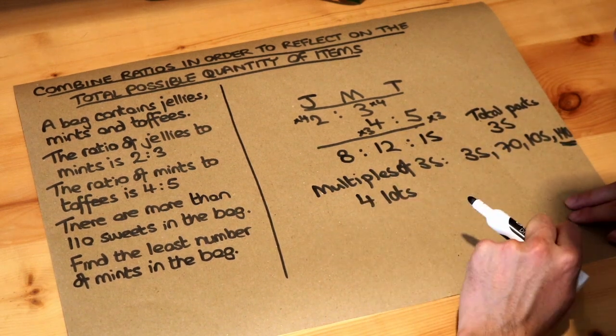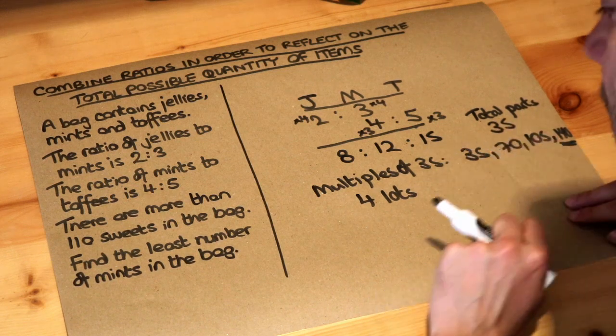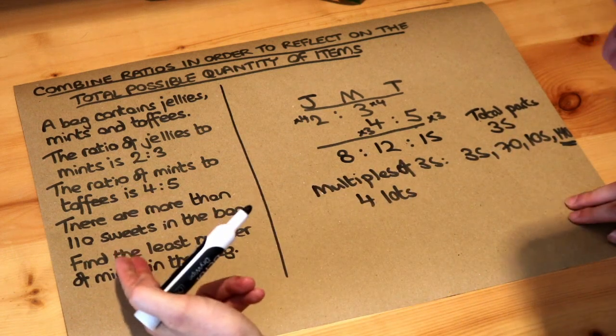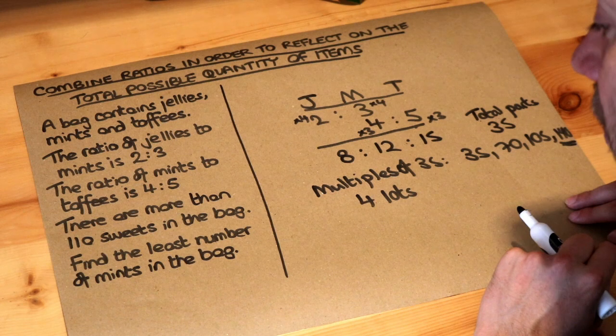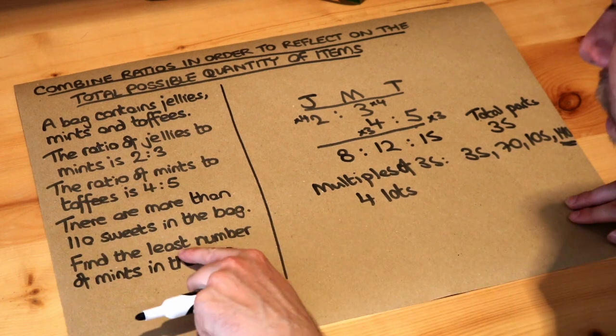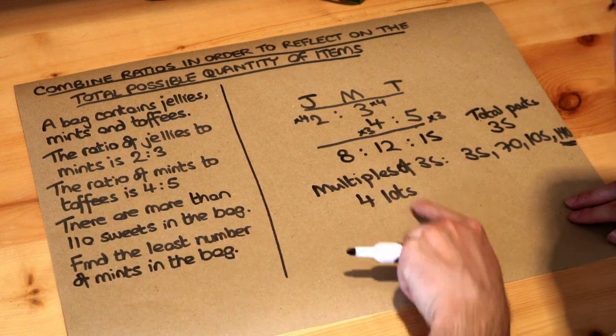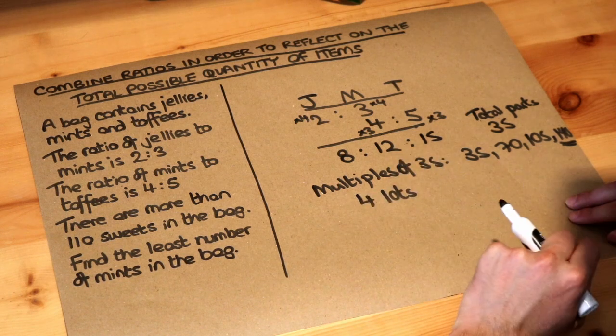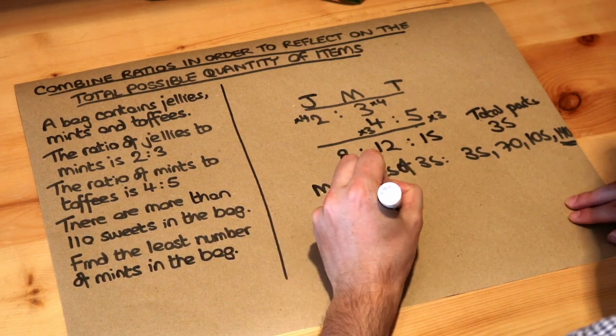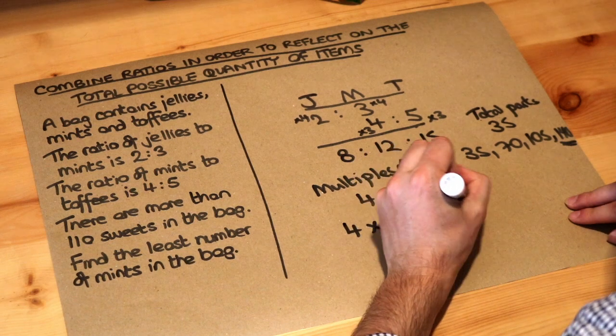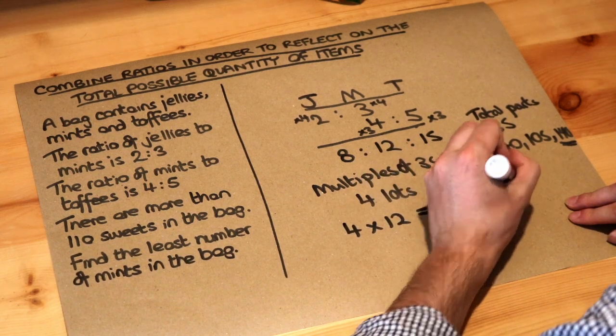So that means we've got at least four lots of 35 sweets. Now if you want the least number of sweets then we do actually want four lots of sweets. And so we want to find the least number of mints in the bag. Well that's going to be four lots of 12 mints. So four times 12 is equal to 48. So there's 48 mint sweets.